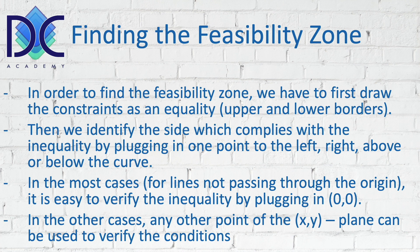When a line passes through the origin we just have to find another point and do the calculations. We can take (1,1) or (-1,-1), but (1,1) is more logical since we only consider positive numbers. It is very important that the point you select is not on the line itself, because that doesn't give any conclusion about which side satisfies the constraint.